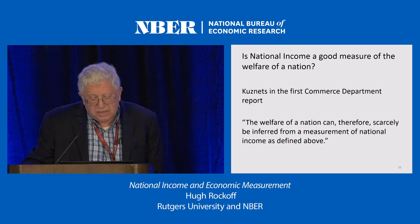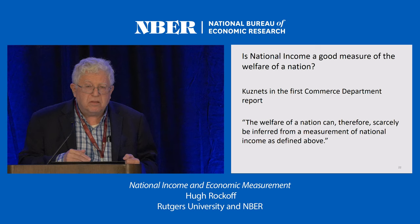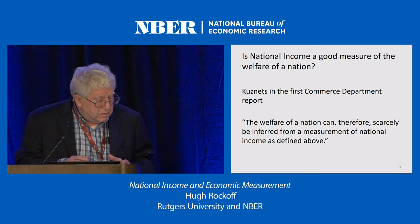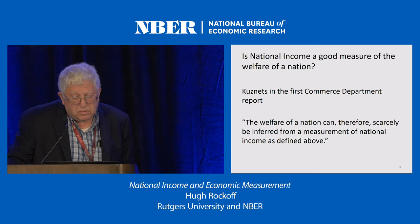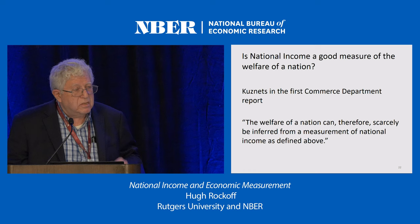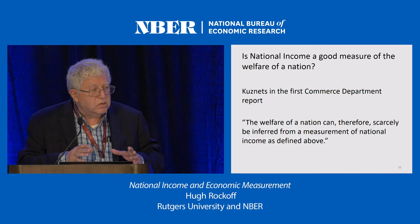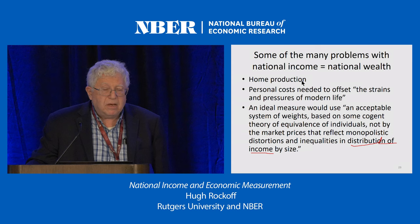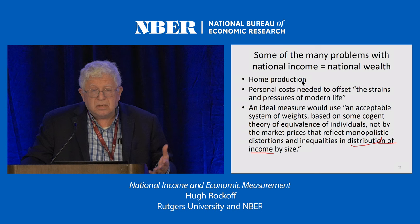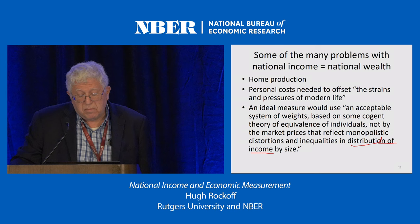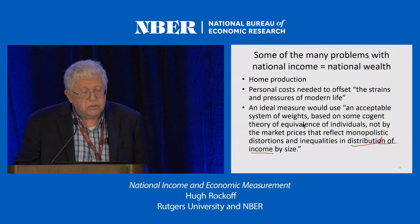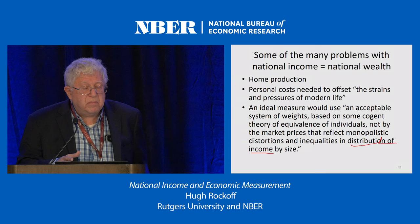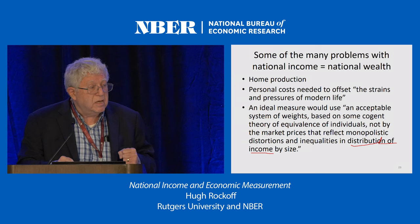One thing I wanted to mention is that Kuznets, in all of his writing — even going back to that original Commerce Department report — stressed that national income was not a good measure of national welfare. He always thought about the various ways GNP could be modified to make it a better measure of welfare. Some of the problems, of course, include home production — noted even in the first NBER study, which made estimates of how much that might be — and the distribution of income, since the prices used are influenced by income distribution and some adjustment is needed.